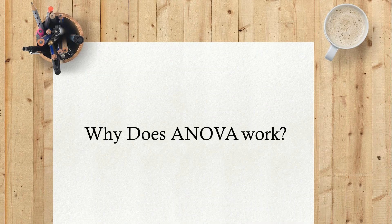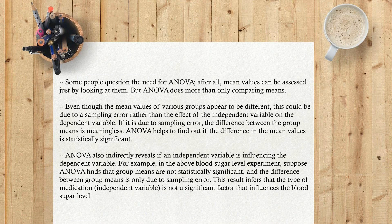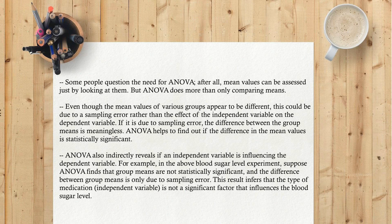Why does ANOVA work? Some people question the need for ANOVA — after all, mean values can be assessed just by looking at them. But ANOVA does more than only comparing means. Even though the mean values of various groups appear to be different, this could be due to a sampling error rather than the effect of the independent variable on the dependent variable. If it is due to sampling error, the difference between the group means is meaningless. ANOVA helps to find out if the difference in the mean values is statistically significant.